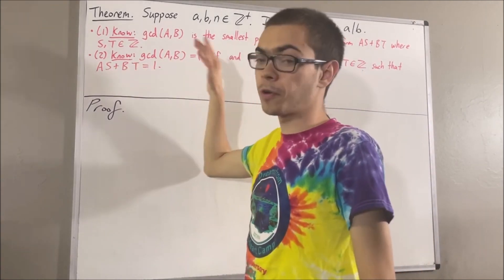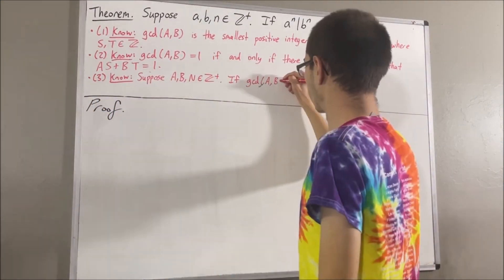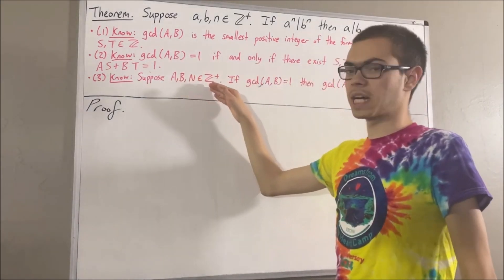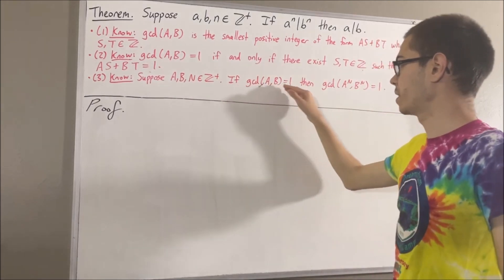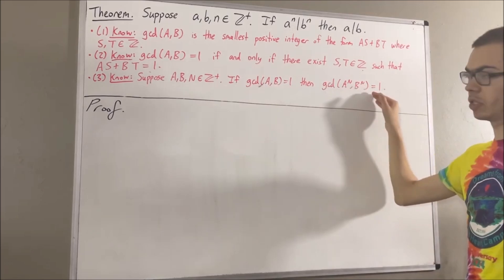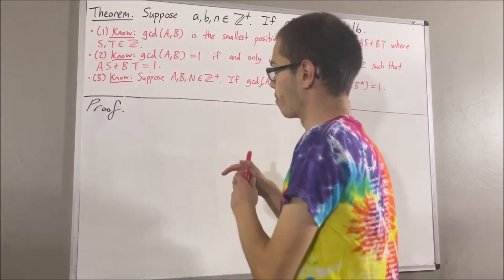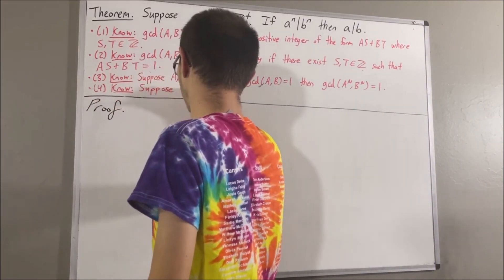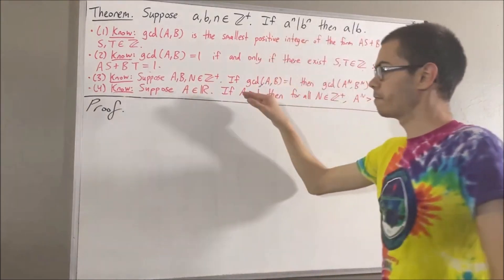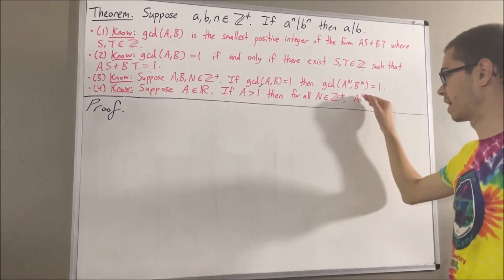Here is a third fact that we're going to use in proving this theorem. Suppose a, b, and n are positive integers. If the greatest common divisor of a and b is equal to 1, then the greatest common divisor of a to the n and b to the n is equal to 1. Finally, here's the fourth fact: suppose a is a real number. If a is greater than 1, then for all positive integers n, a to the n is greater than 1.